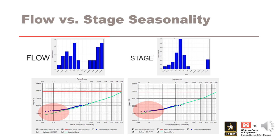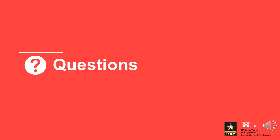If there is not reasonable agreement, two separate curves may need to be developed and then blended into a final stage frequency curve. The stage-based seasonality would be used for the frequent part of the curve and the flow-based seasonality would be used for the infrequent part of the curve. You should now have an understanding of flood seasonality, how to complete the flood seasonality in RMC-RFA, and be introduced to how it's used in the RMC-RFA software.